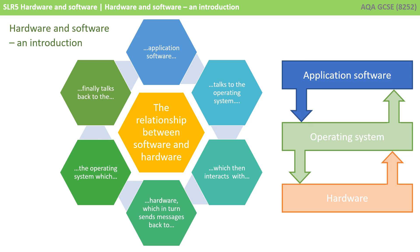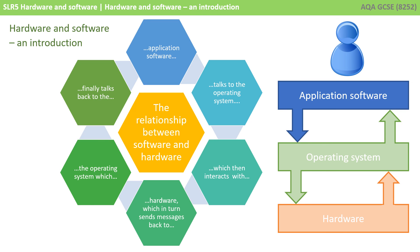You don't buy a computer game and install it directly on the hardware — you install it on the operating system. To further extend this diagram, you can think of yourself as the user at the top of this stack. You interact directly with application software, which talks to your operating system and then to your hardware. Messages get passed back up to the operating system and the application software, and then you see the end result in the form of updates on your monitor or output through your speakers.